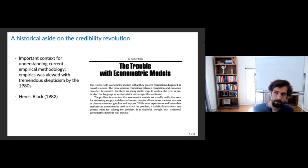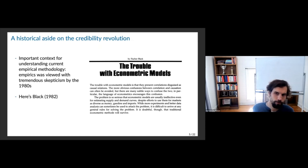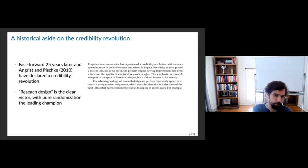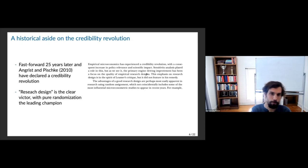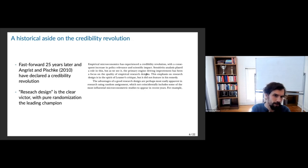It's important to understand the historical context: in the 1980s there was really a limited amount of empirical work that successfully answered questions in a credible applied way. Fast-forward 25 years to Angrist and Pischke, who wrote the lead article in a Journal of Economic Perspectives symposium declaring a 'credibility revolution.' Their paper is called 'Taking the Con Out of Econometrics,' and their argument is that research design is the victor, with randomization leading the way.